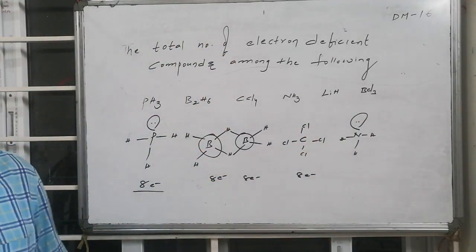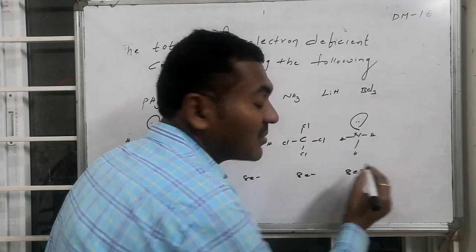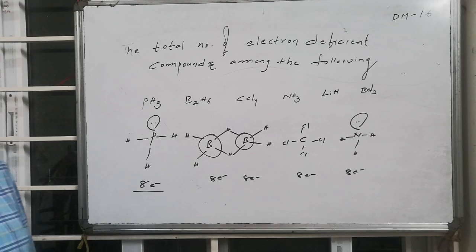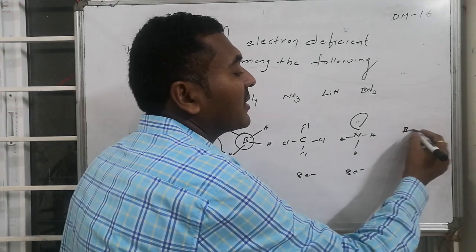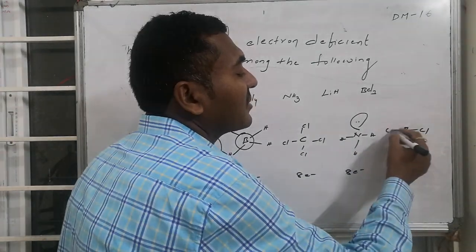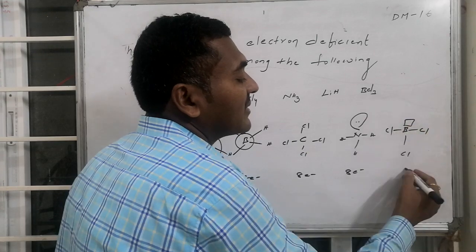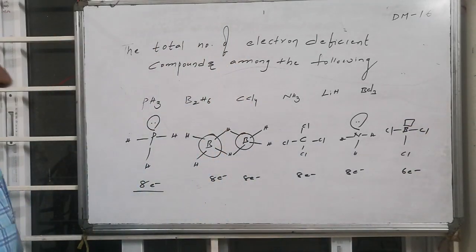It also has eight electrons. Whereas if I go for boron trichloride, this is boron connected with three chlorines. Total number of electrons present are six electrons.